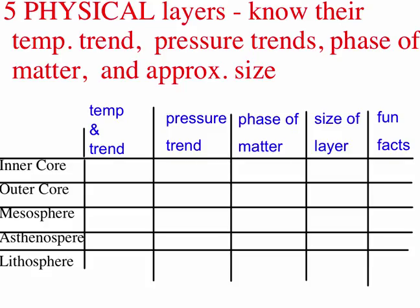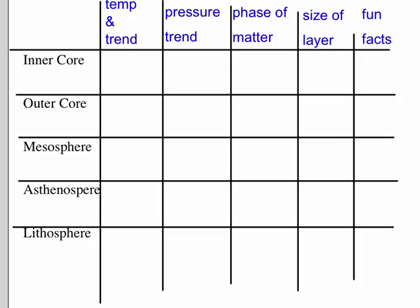What you want to do is set up a chart like this in your science journal where you have the five physical layers, going in order from the center of the Earth to the outside. You're going to want to write down their temperature and trend — meaning is the temperature getting warmer or colder as you go away from the center — the pressure trend, phase of matter, the size of the layer, and any fun facts. You're going to need more space than this to write in, so use more space in your notebook.